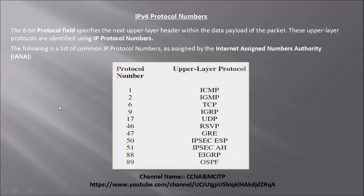I have already spoken about the fields of the IP address in my previous video. You can go through all those 12 fields, what are the functionalities and what are the roles of those fields, if you go through my last video. The 8-bit protocol field specifies the next upper layer header within the data payload of the packet. I had already explained the meaning of this upper layer header within the data payload in that video. These upper layer protocols are identified using IP protocol numbers.